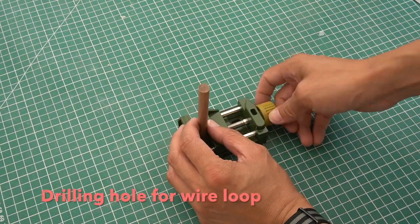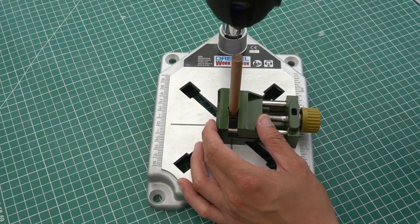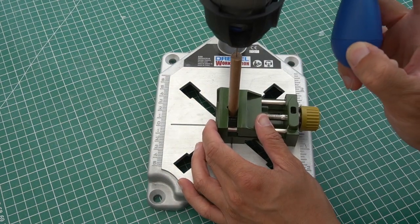Now with the handles, we need to drill a 1mm hole into the handles so that we can apply the metal loop later on.